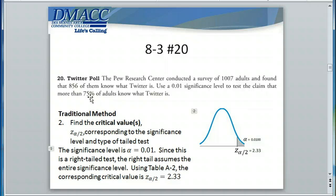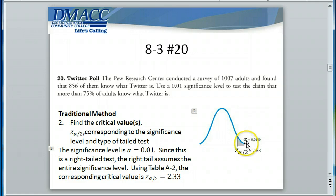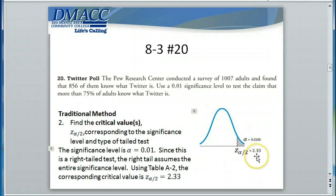Using the traditional method, we find the critical value that breaks up our normal distribution into the 1% significance tail to the right — because it's a right-tailed test — and the 99% area to the left. That critical value breaks up your distribution into what we call the critical region, which is the area of the significance, and the non-critical region. For an area of 1% in the right tail, that gives us an area to the left of 99%, and using Table A2, the normal distribution, that critical value is 2.33.